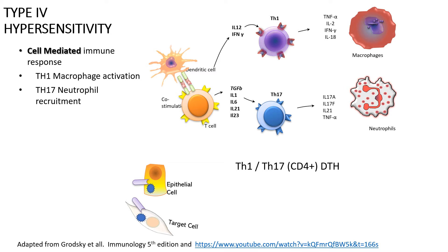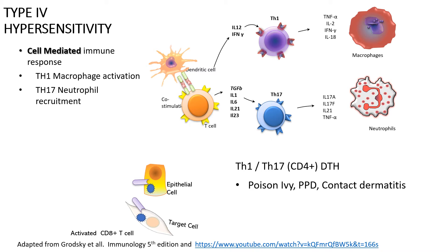It does take time for the dendritic cell to present with the appropriate co-stimulation to the T cell, differentiate them, and then bring back those target cells into contact with the macrophages or the neutrophil. This takes time — it could be days to weeks. This is a typical response we have to poison ivy. Some patients develop the response weeks after contact with poison ivy, and some others can develop it within three or four days.